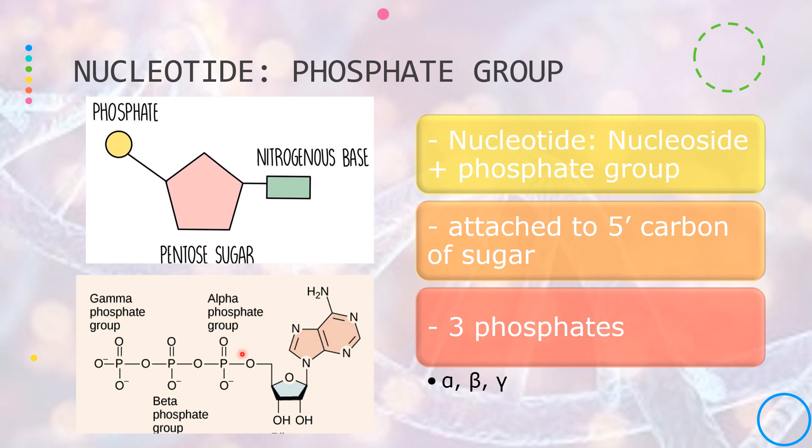The individual phosphate groups are designated as alpha, beta, and gamma, with the alpha phosphate being the one attached directly to the sugar.